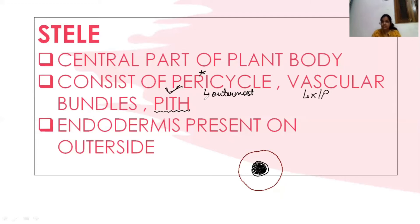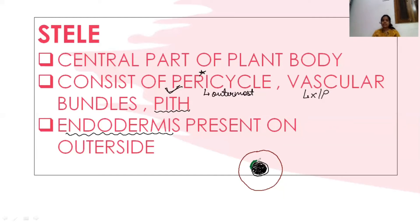Outside the stele, the tissue present in the plant is endodermis. Endodermis is actually the innermost part of the cortex layer. So we can say that stele is a central vascular cylinder with or without the pith. It starts with the pericycle, and on the outside of the stele what is present is the innermost layer of the cortex — that is endodermis. These are the introductory points from which exam questions are possible.